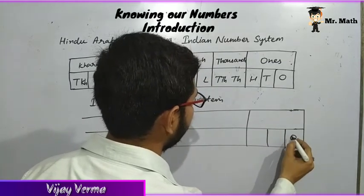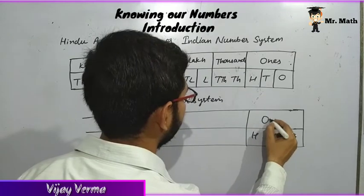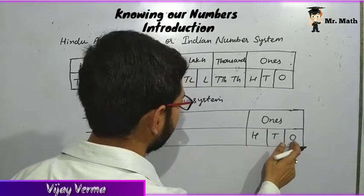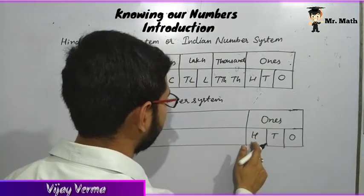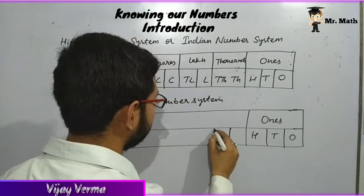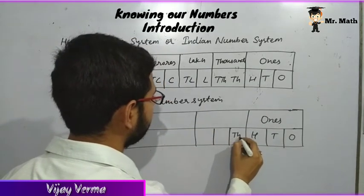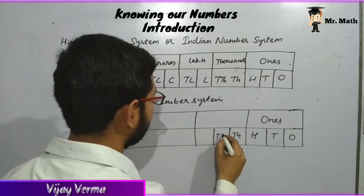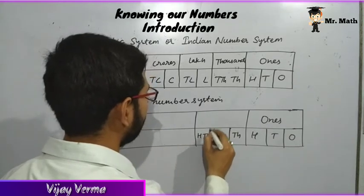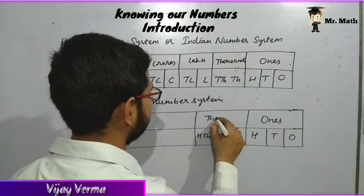In the first period: 1, 10, and 100 — with place values ones, tens, and hundreds. The next period is thousands, which has three place values: 1,000, 10,000, and 100,000.